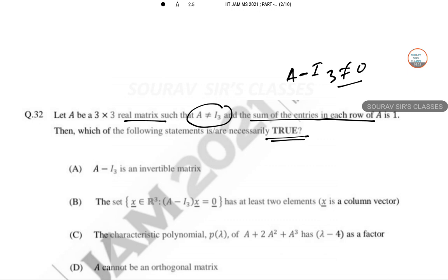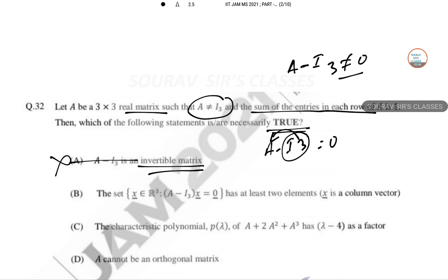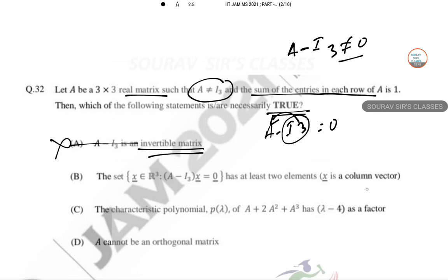This is necessarily true, they have asked. Invertibility is not always applicable because there may be a situation where A minus I₃ may be 0 in some cases where identity matrix is not nullifying. So this is may be true or false, this is not the correct one.